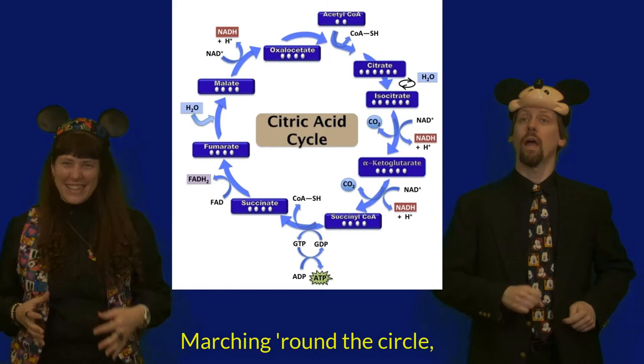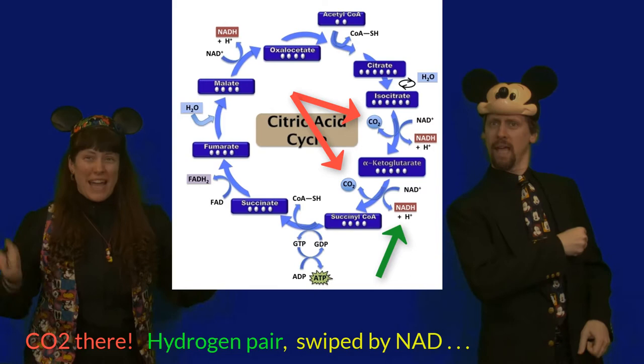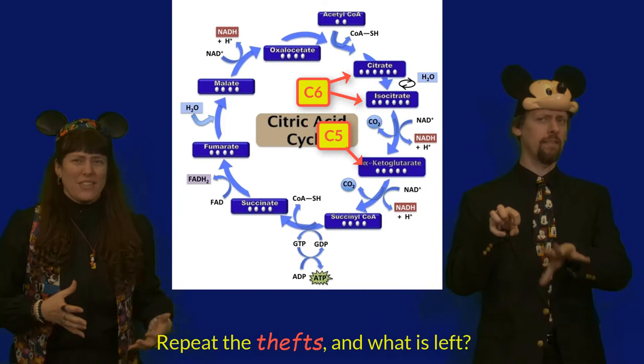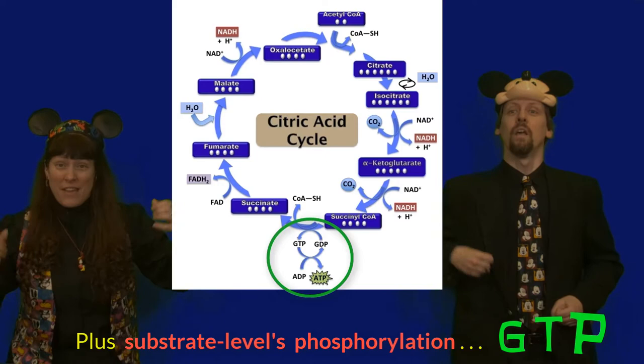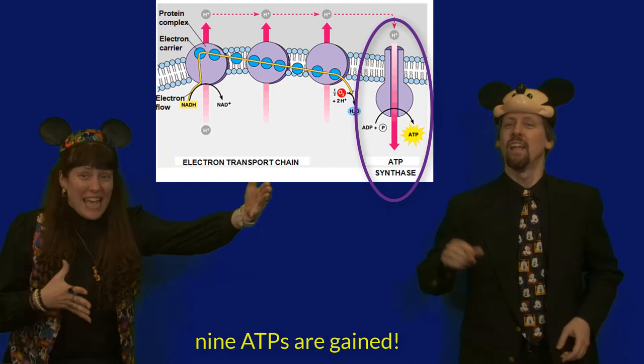Marching round the circle, we lose atoms sequentially. CO2 there, hydrogen pairs swiped by NAD. Plus count the carbons down from six — there's five in alpha-ketoglutarate. Repeat the thefts of what is left, a four-carbon series. FAD one only, NAD that makes three. Plus substrate-level phosphorylation GTP. The hydrogens are dumped right in the electron transport chain to spin synthase, and in that case, nine ATPs are gained.